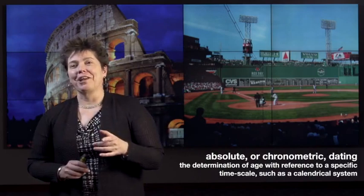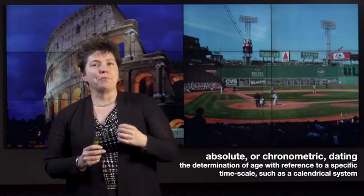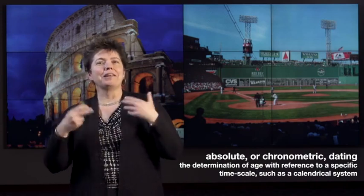Absolute dating, on the other hand, is when an actual chronological date is assigned to something. This is also called chronometric dating. I am 52. Michael is 44. Fenway Park was opened in 1912 CE. The Coliseum in 80 CE. You need absolute dates to get a sense of just how much time divides two past events or past monuments, and thereby to see how quickly or slowly things change between those two points. That's something relative dating cannot tell you.